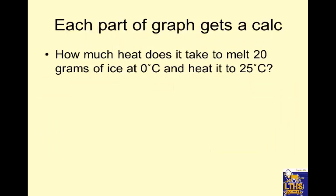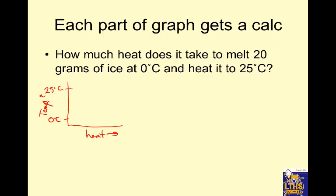Every part of a graph gets its own calculation. How much heat does it take to melt 20 grams of ice at 0°C and heat it to 25°C? The two temperatures given are 0°C and 25°C. Melting is a phase change, so we have a flat line. Once it's all melted, we can raise the temperature because it's all liquid. There are two sections of the graph, so we need two heat equations.